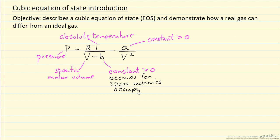The second term is related to the fact that there are attractive interactions between molecules. Because A is positive, the second term with the negative sign in front of it means the pressure, due to attractive forces, is going to be lower than what we expect from the ideal gas law.